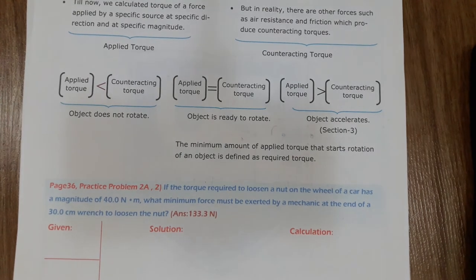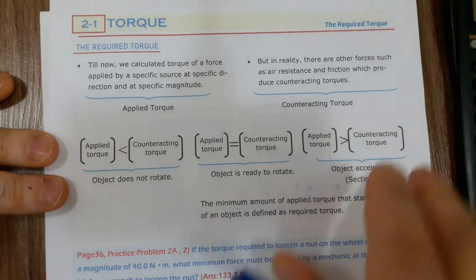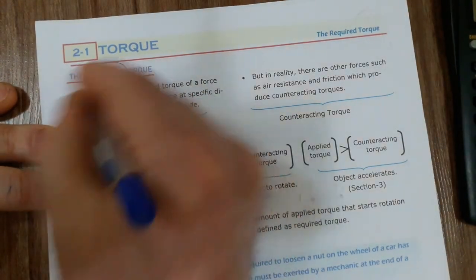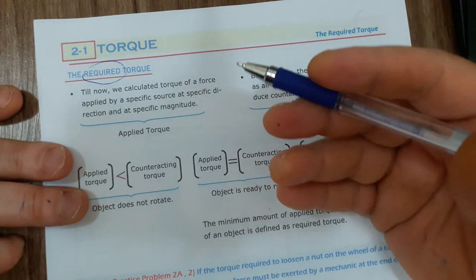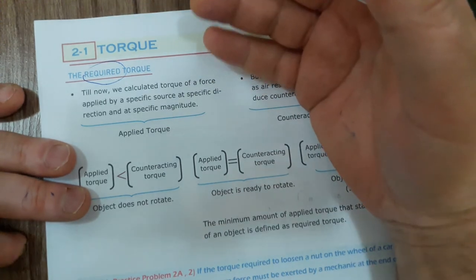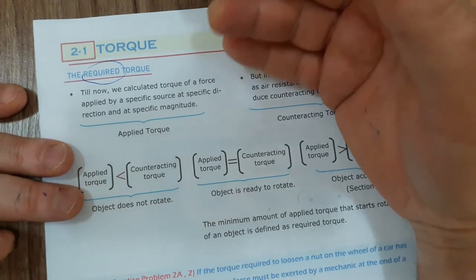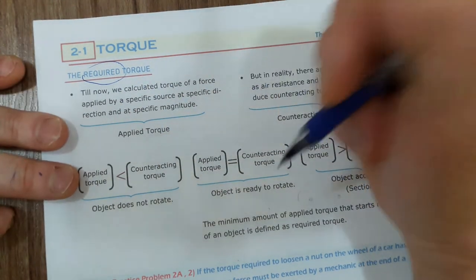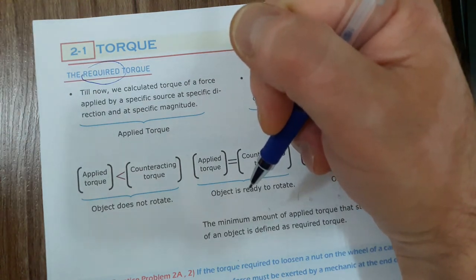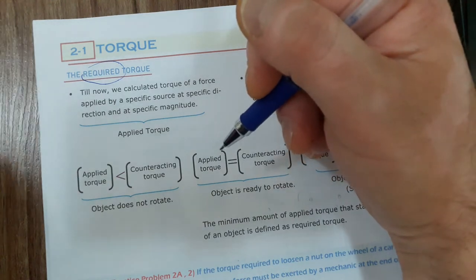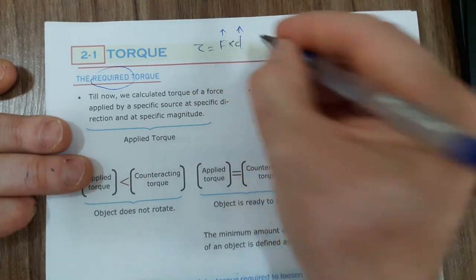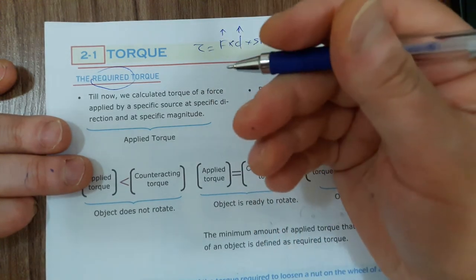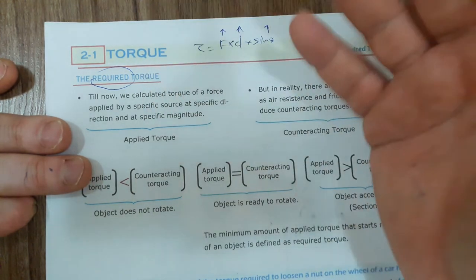Now a slightly different topic: required torque. Until now we calculated torque without caring whether it can actually rotate an object. We can make torque greater by increasing force, increasing distance, or making the angle closer to 90 degrees. But we didn't consider whether this torque can rotate an object or not.